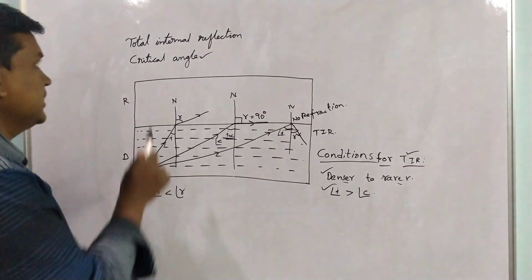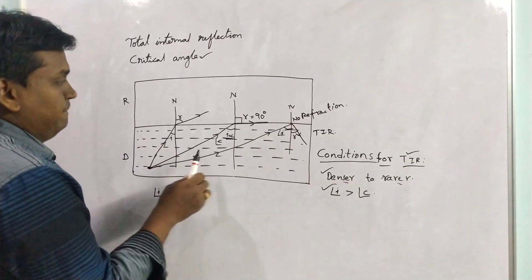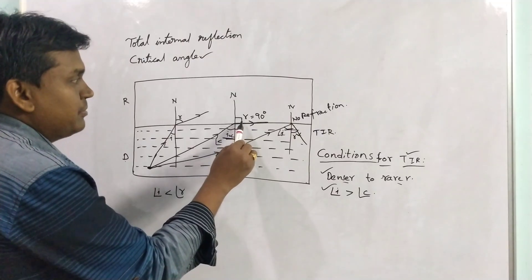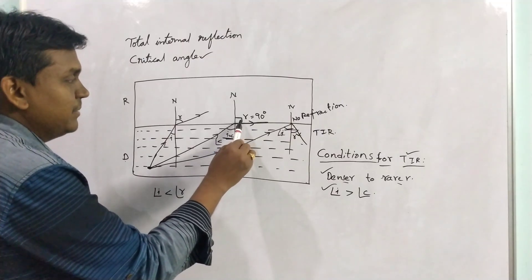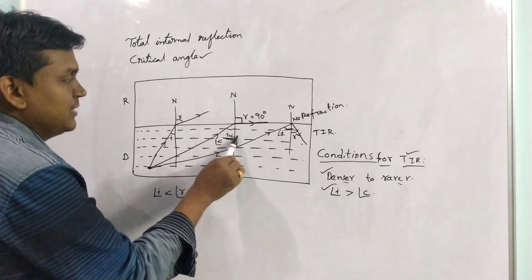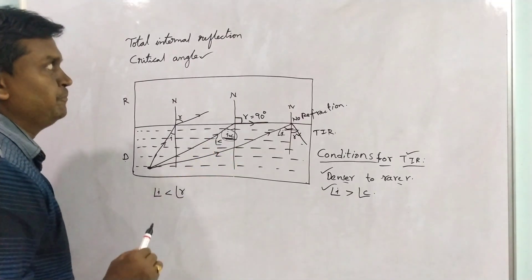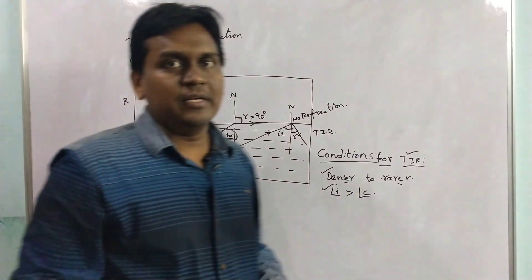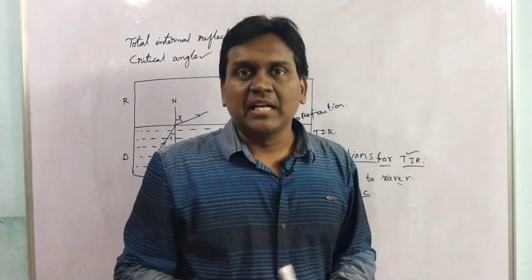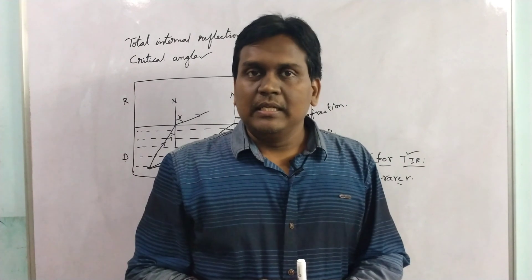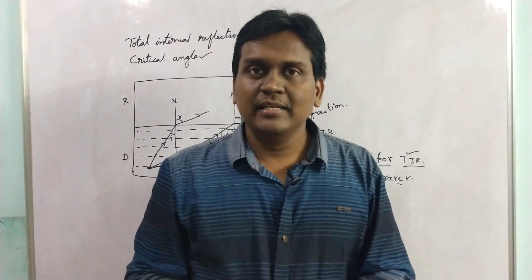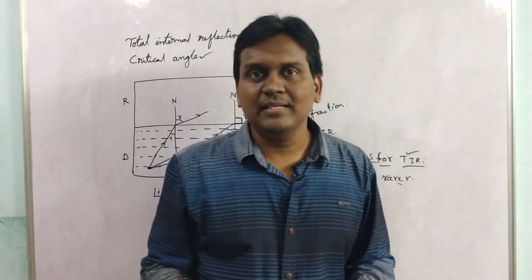Coming to the critical angle — the refracted ray should make 90 degrees to the normal in the rarer medium. Then the angle of incidence in the denser medium is called the critical angle. This is about total internal reflection and critical angle. The relation between refractive index and critical angle is N equal to 1 by sin C.